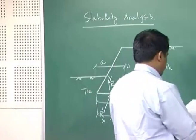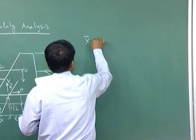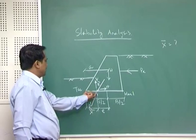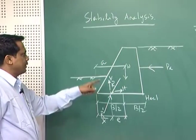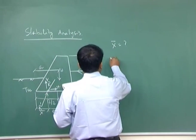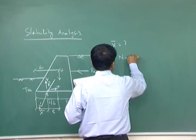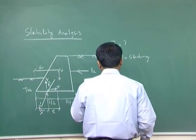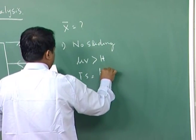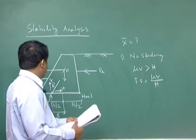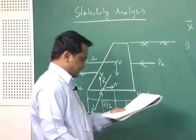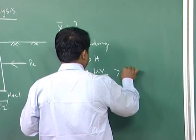There are different stability checks to find. First, you find x-bar — the distance at which the resultant force acts from the toe, by taking moments about the toe. Then you find the factor of safety for no sliding: mu·V must be greater than the horizontal forces. So, factor of safety equals mu·V divided by horizontal forces, where mu is the coefficient of friction between wall and soil, H is total horizontal force, and V is vertical forces. This factor of safety should be greater than 1.5 for no sliding.